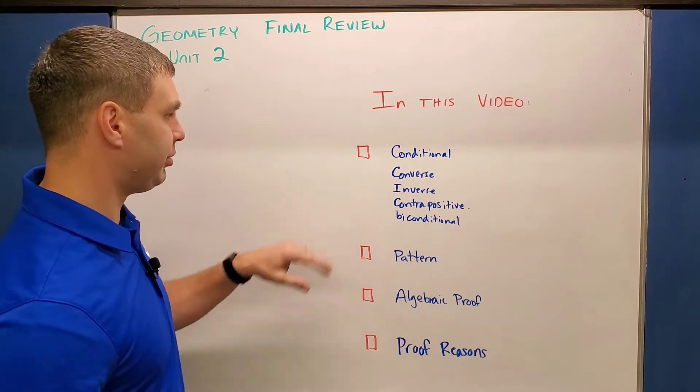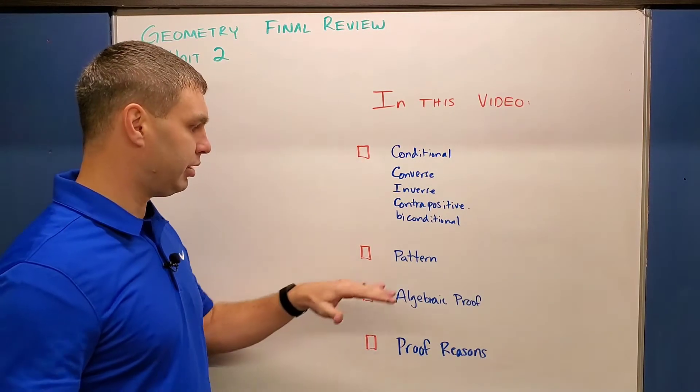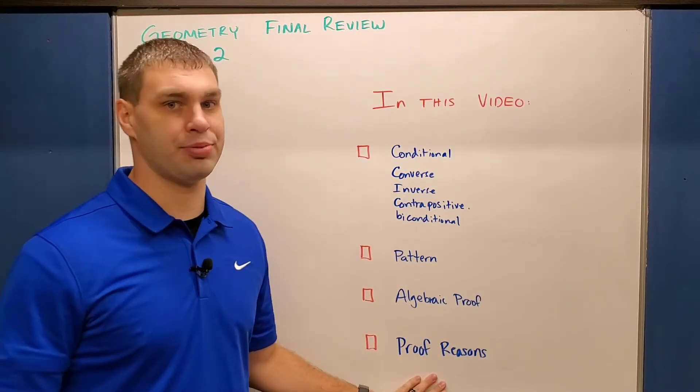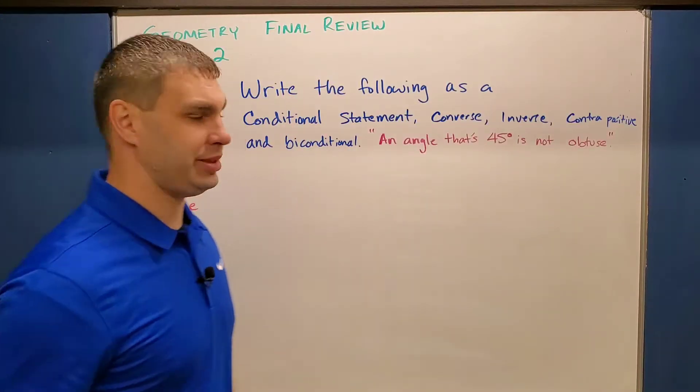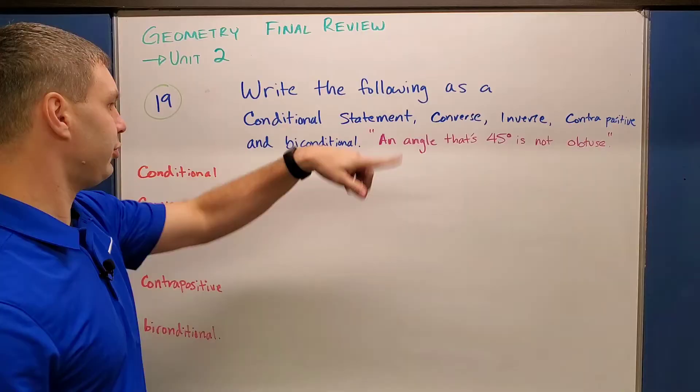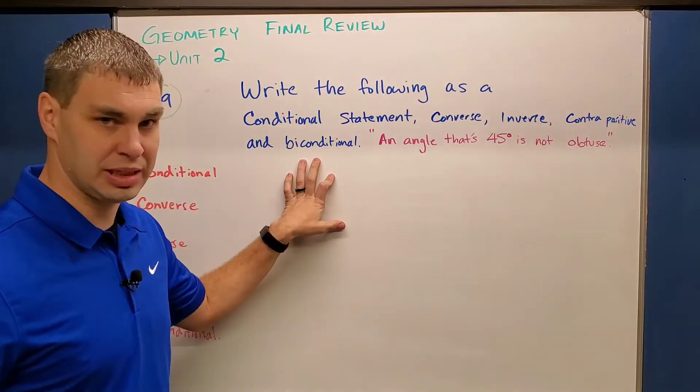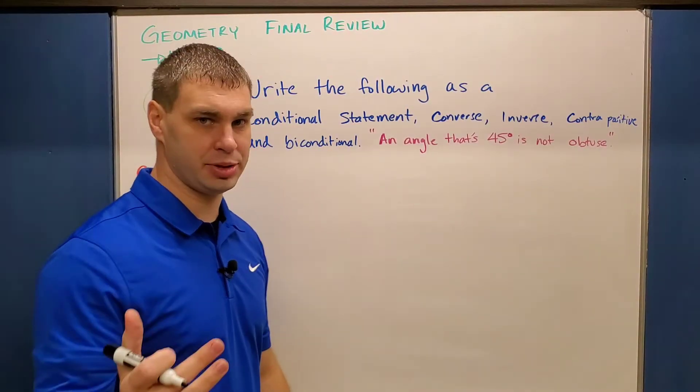So with that said, I'm going to go over some conditional statements. I have these five I want to talk about. We're going to go over a couple of patterns as well as give you an algebraic proof. And lastly, talk about some other proof reasons that you need to know for the final. Our first problem here says that we're going to write the following as a conditional statement, converse, inverse, contrapositive, and biconditional. And that statement is this: an angle that's 45 degrees is not obtuse.